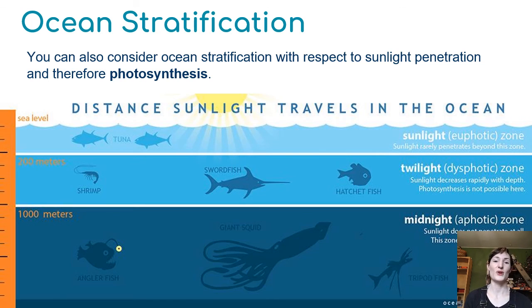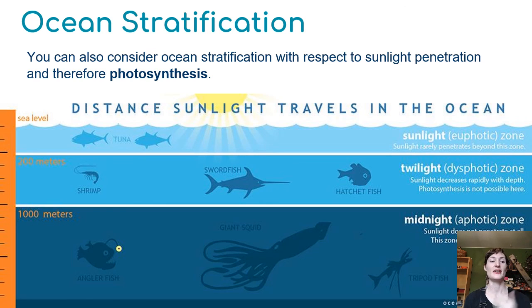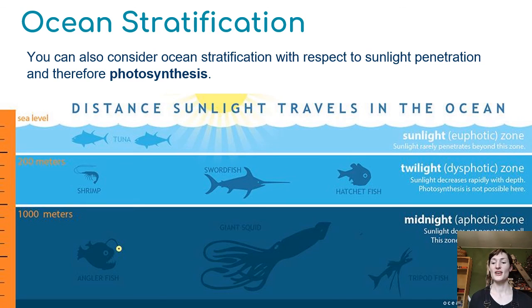There are many ways the food web can exist in those deeper zones — we'll talk about hydrothermal vents and how they support their own food webs. Overall, the three major differences — temperature, salinity, and sunlight availability — create incredibly different, stratified biomes within ocean layers.